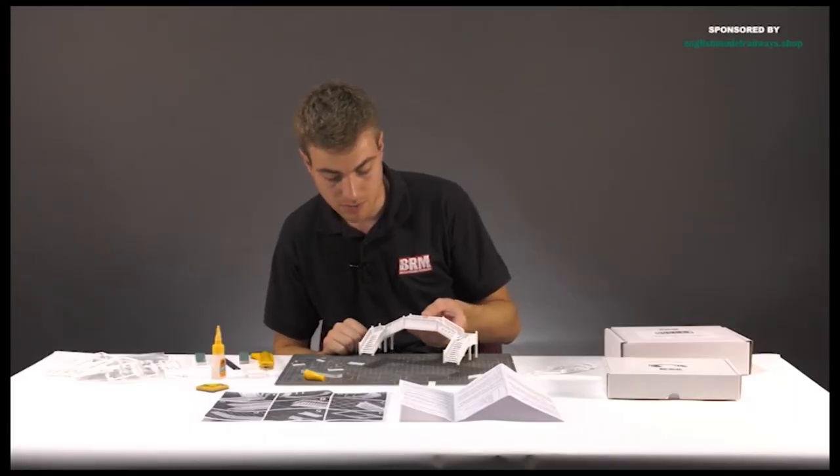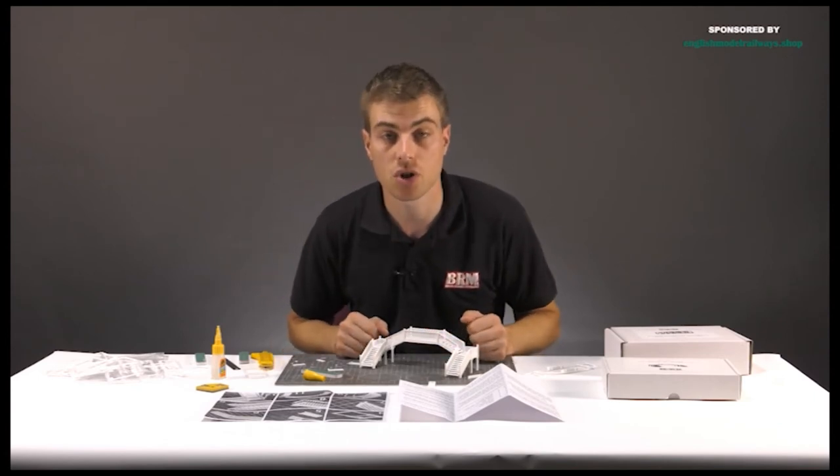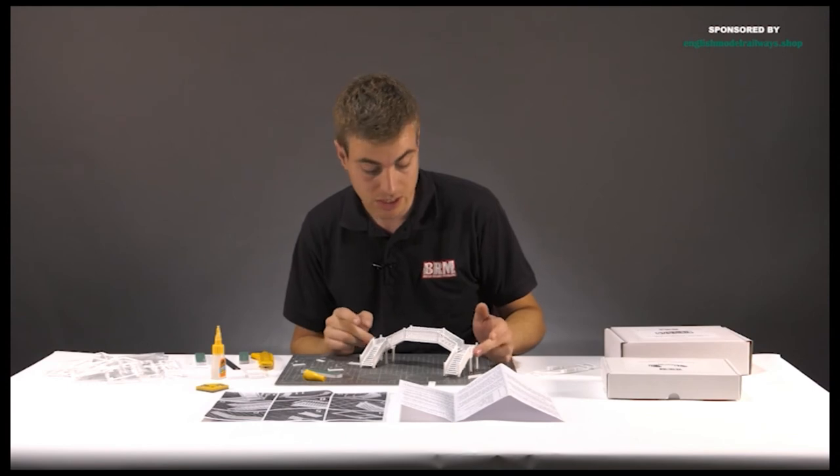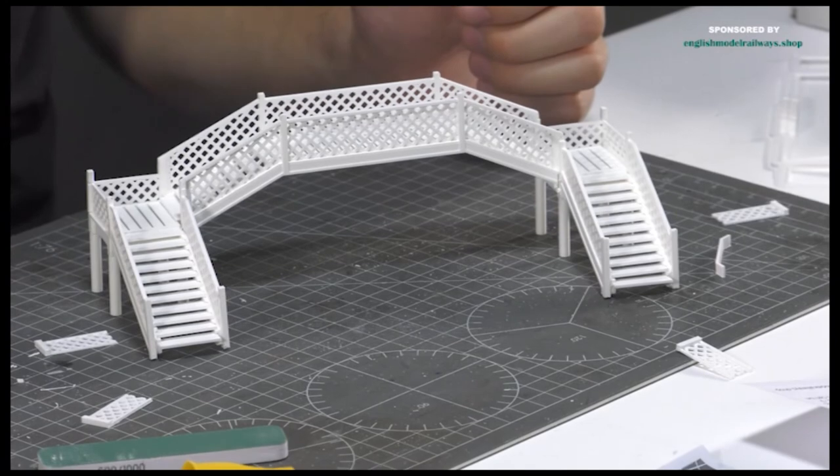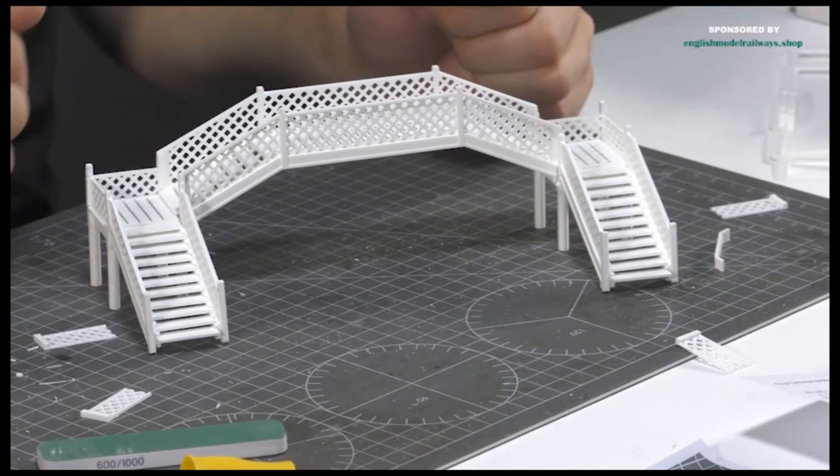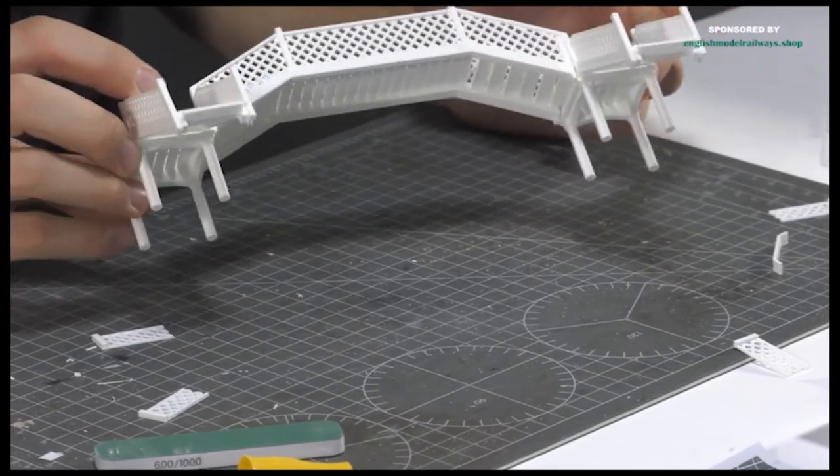As far as kits go, if you fancy having a go at a 3D printed kit, check out englishmodelrailways.shop for the details. If it's not a footbridge you're after for your layout, it could be a box girder bridge - you name it, there's more being added to that website every passing month. So check them out and have a go for yourself.